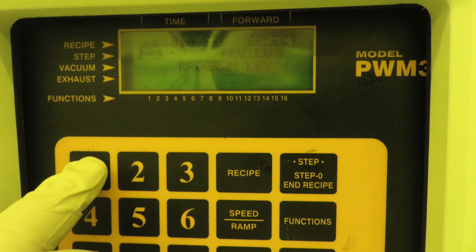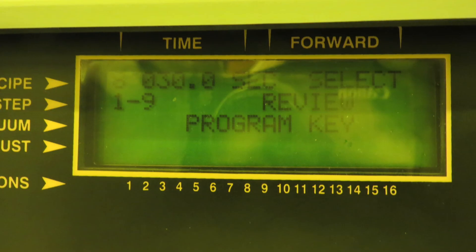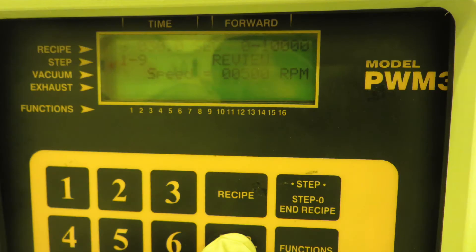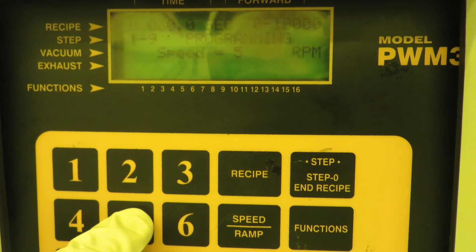Say you wanted to enter 500 RPM. You would punch in 5-0-0 and then enter. If you hit the same speed button, it toggles now to ramp. Remember that you won't actually make any changes unless you hit enter.